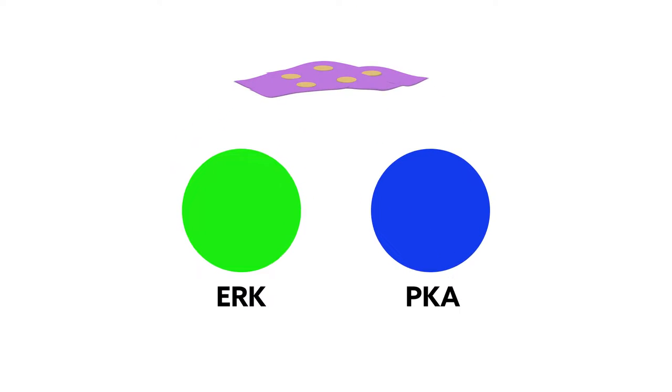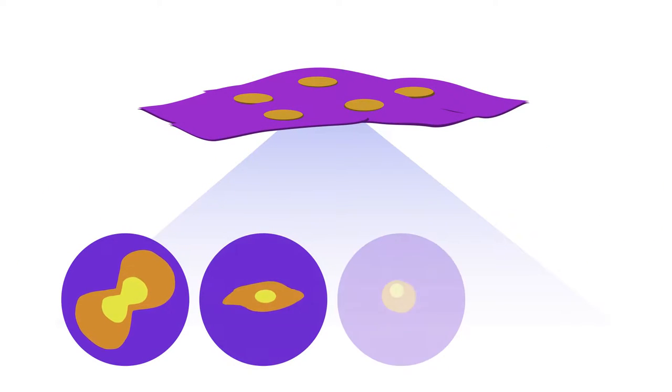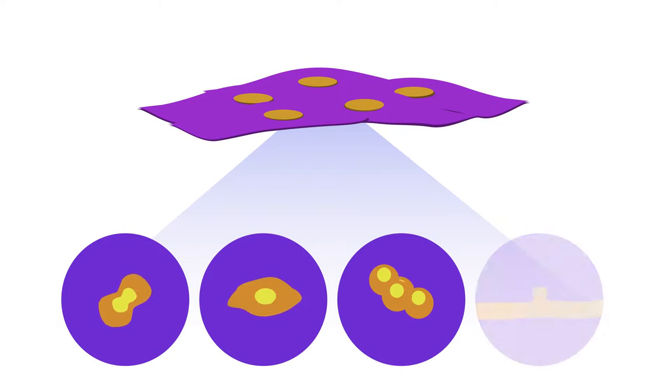The unprecedented sensitivity of the new sensors could enable scientists to further define the roles of PKA and ERK in various forms of cellular signaling, such as cell division, differentiation, and proliferation, as well as synaptic plasticity.